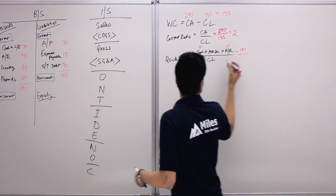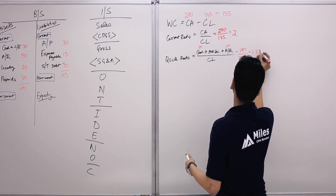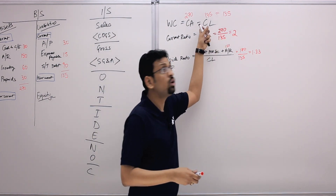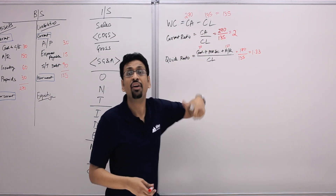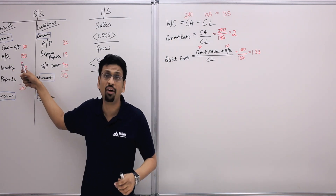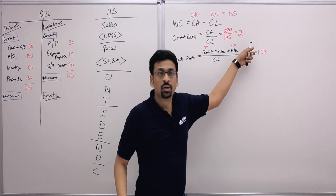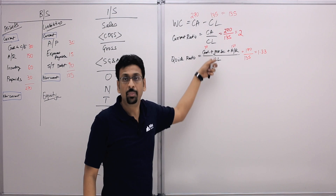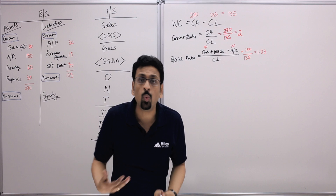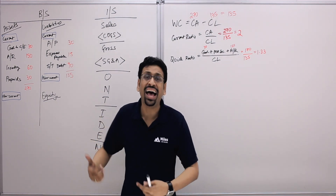The denominator remains 135, so the quick ratio is 180 divided by 135, which is approximately 1.33. The current ratio is higher naturally because its numerator includes inventory and prepaids. In the quick ratio, you exclude those — 270 minus 90 equals 180 — denominator stays the same, giving 1.33.